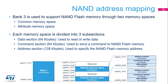Bank 3 is used to interface with the NAND Flash memory. It is divided into two memory spaces: common memory space and attribute memory space. The common memory space is for all NAND Flash read and write accesses, except when writing the last address byte to the NAND Flash device, where the CPU must write to the attribute memory space. This allows implementation of the pre-write functionality needed by certain NAND Flash memories. Each memory space is subdivided into three sections: data section (64 KB), used to read or write data; command section (64 KB), used to send a command; and address section (128 KB), used to specify the NAND Flash memory address.